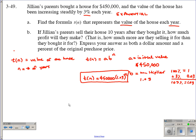Part B says, if Jillian's parents sell their house 10 years after they bought it, how much profit will they make? That is, how much more are they selling it for than they bought it for? Express your answer as both a dollar amount and as a percent of the original purchase price. First we need to figure out how much did they sell it for. Let's use our equation from part A to figure that out.